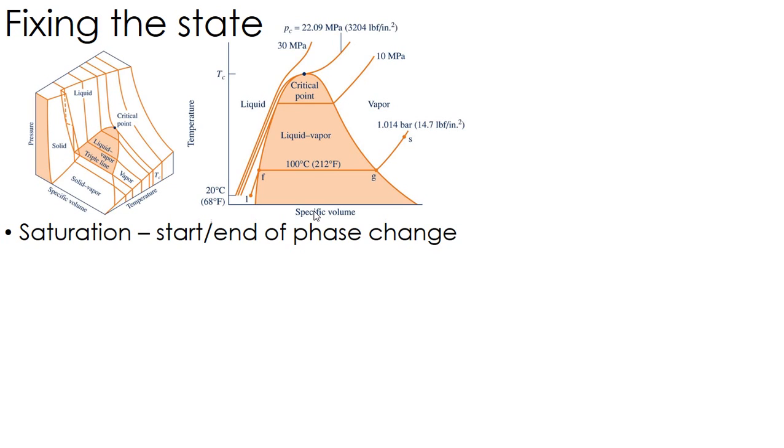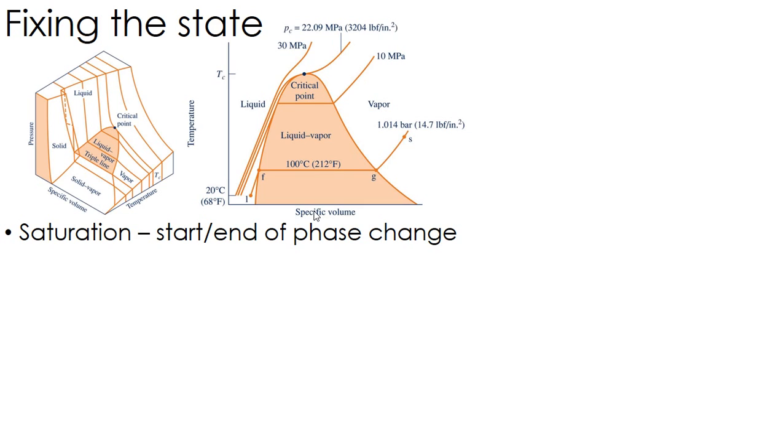A few definitions we have to talk about. First is saturation. This would be the start and end of a phase change. The most common phase change that we're going to look at is going from a liquid phase to a vapor phase. So saturation is basically the start of coming to a boil, and then at the end of the boil when everything's a vapor. Saturated liquid is right when it starts. Saturated vapor is right when it ends.